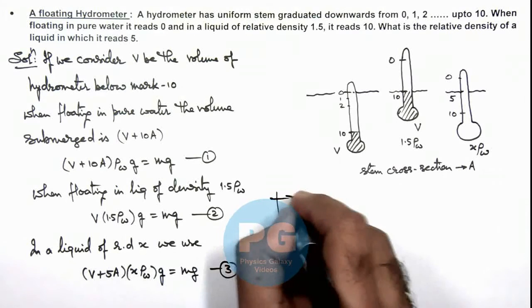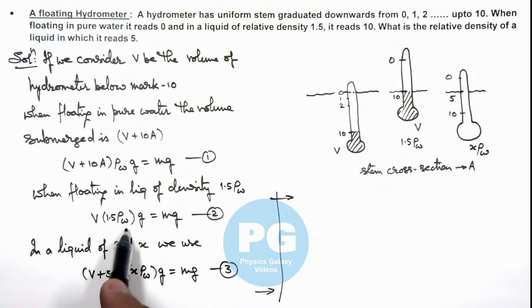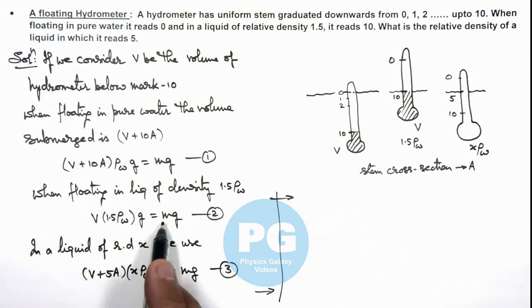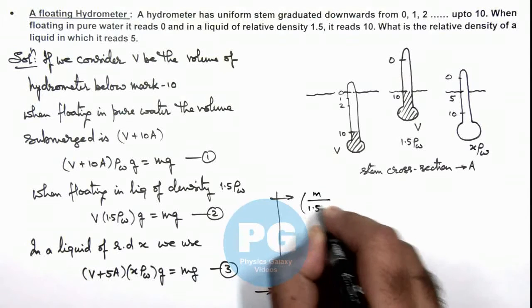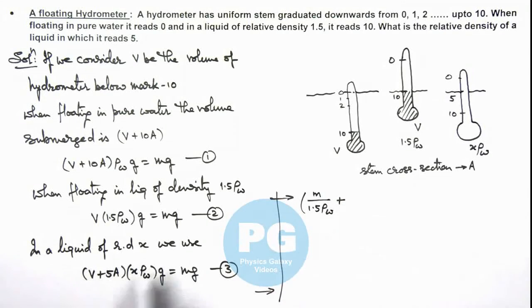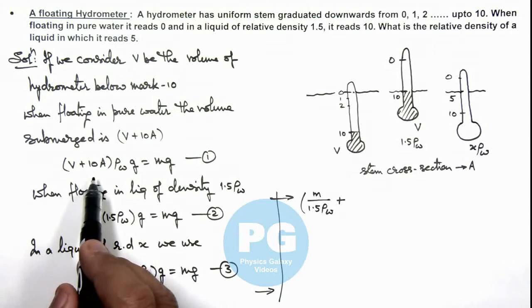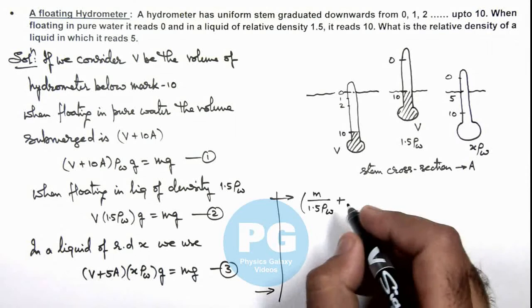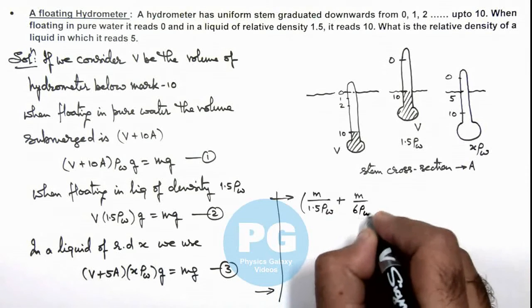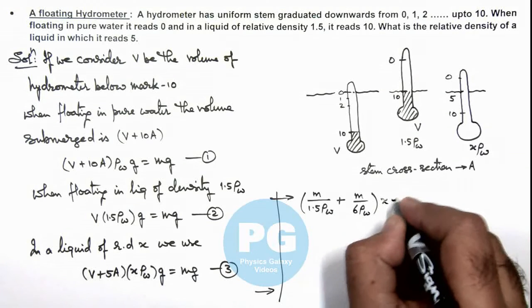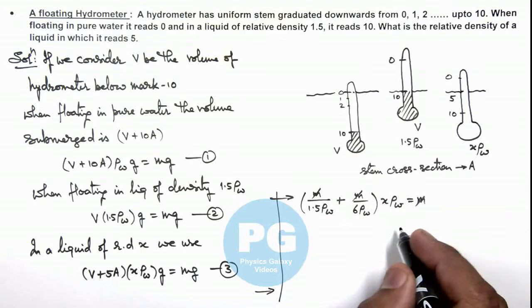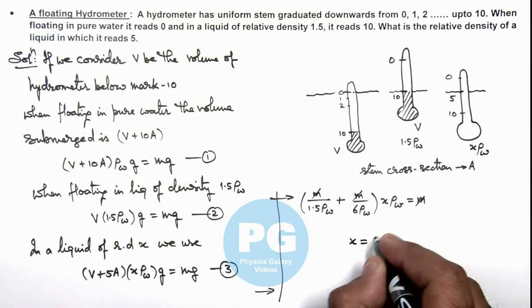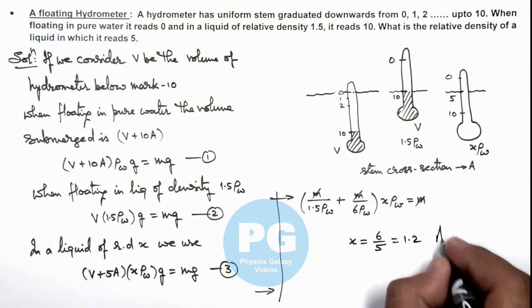Now if we solve these equations, from equation 1 and 2 we substitute in equation 3. Then we can see the volume can be given as m/(1.5 ρ_w), so this is m/(1.5 ρ_w) plus if we substitute for area from this relation, we can substitute this as m/(6 ρ_w) multiplied by x ρ_w equals m. As g gets cancelled out, m also gets cancelled out, and if we simplify this relation, we get the value of x equals 6/5, that is equal to 1.2, which is the result of this problem.